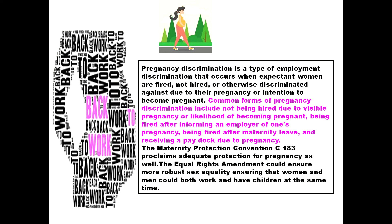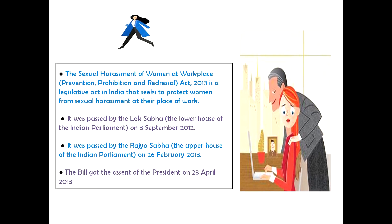Other examples of pregnancy discrimination include reduction in pay or hours, pressure to resign, and failure to remove risks at work and take action to protect health and safety during pregnancy. To show pregnancy or maternity discrimination, you don't need to compare yourself to a man or a non-pregnant woman — you only need to show the treatment was because of your pregnancy or absence on maternity leave. All employees, casual workers, agency workers, and contractors are protected against pregnancy and maternity discrimination from day one of employment.